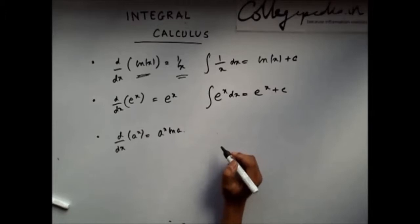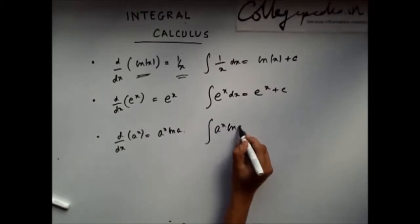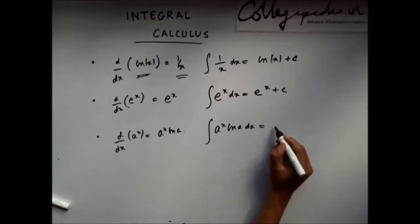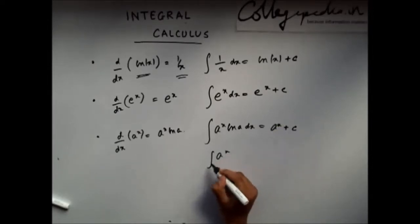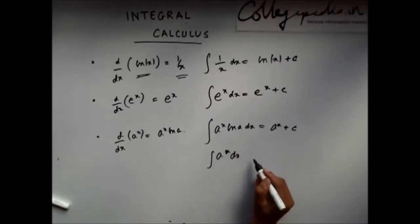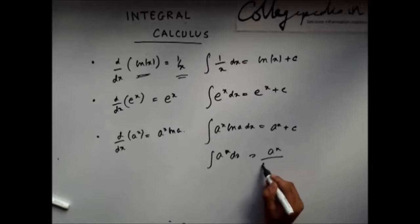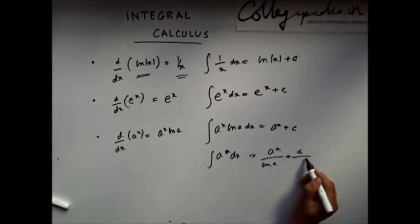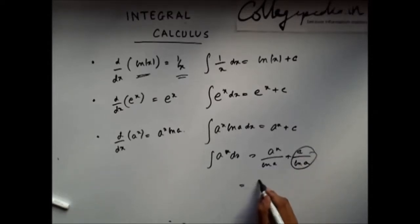Next formula: a^x. If I differentiate a^x, I will get a^x ln(a). So if I integrate a^x, I can write it as a^x/ln(a). And this constant c/ln(a), I can write as another constant c dash. So the integral is a^x/ln(a) + c.